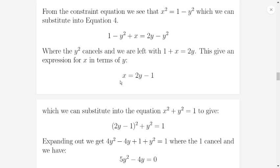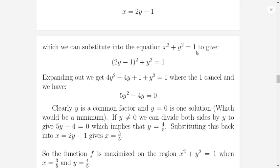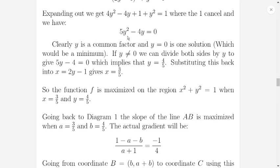Now we have two equations: the constraint X squared plus Y squared equals 1, and X squared plus X equals 2Y minus Y squared. Rearranging the constraint gives X squared equals 1 minus Y squared. Substituting in, we get 1 minus Y squared plus X equals 2Y minus Y squared. The Y squared terms cancel, leaving 1 plus X equals 2Y, so X equals 2Y minus 1. Substituting into the constraint gives 2Y minus 1 squared plus Y squared equals 1, which expands to the quadratic 5Y squared minus 4Y equals 0. So Y equals 0 or Y equals 4 over 5.